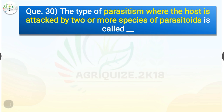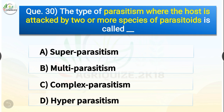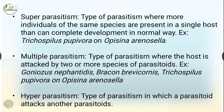Question number thirty: The type of parasitism where the host is attacked by two or more species of parasitoids is called dash. The options are superparasitism, multiparasitism, complex parasitism, or hyperparasitism. The correct answer is option B — multiparasitism. Superparasitism is the type where more individuals of the same species are present in a single host than can complete development. Example: Trichospilus pupaevorax on Opisina arenosella.